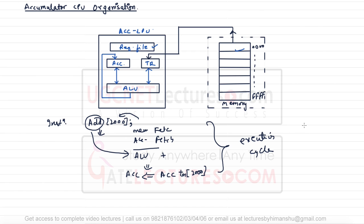Let us look at some examples for the Accumulator CPU organization. We'll work through a mathematical instruction like A multiplied by B plus C, and see how to perform this kind of operation in the Accumulator CPU organization in the next video.